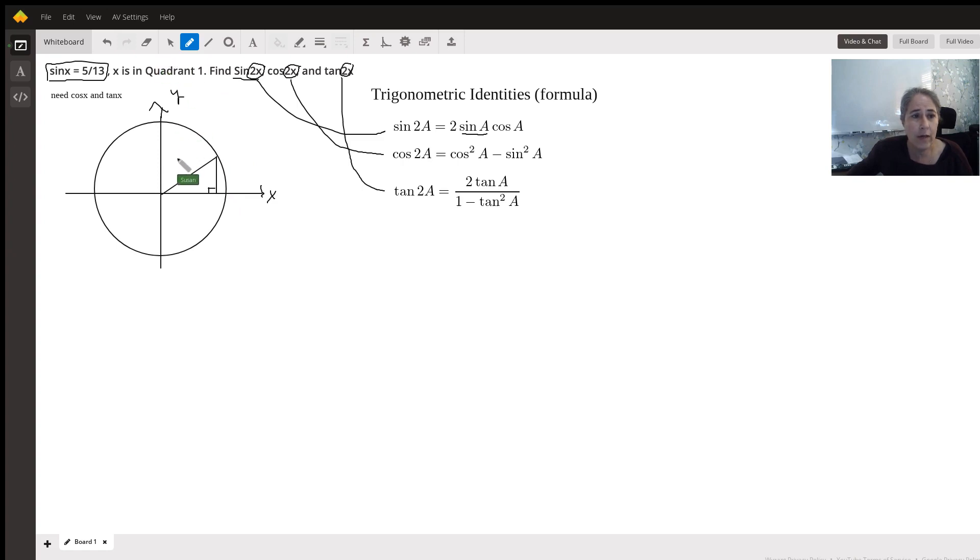So I know that the radius is 13 because the sine is y over r and the y is 5. And this is the one I'm going to need to find because cosine is going to be the x value over 13. So this relationship here for x, some angle, is going to be x squared plus 5 squared equals 13 squared.